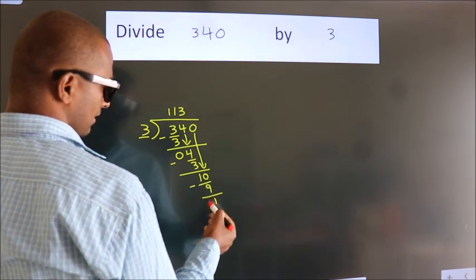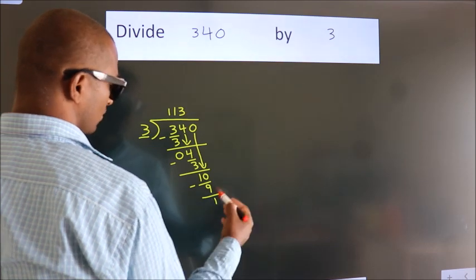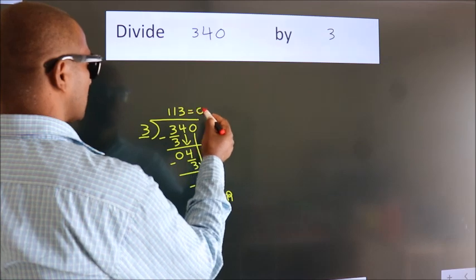We get 1. After this, no more numbers to bring down. So we stop here. This is our remainder. This is our quotient.